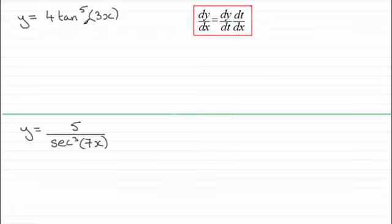So for y equals 4 tan to the power 5 of 3x what I'd want to do first of all is just rewrite this or at least think about it as 4 times all of the tan of the angle 3x and that is all raised then to the power 5.